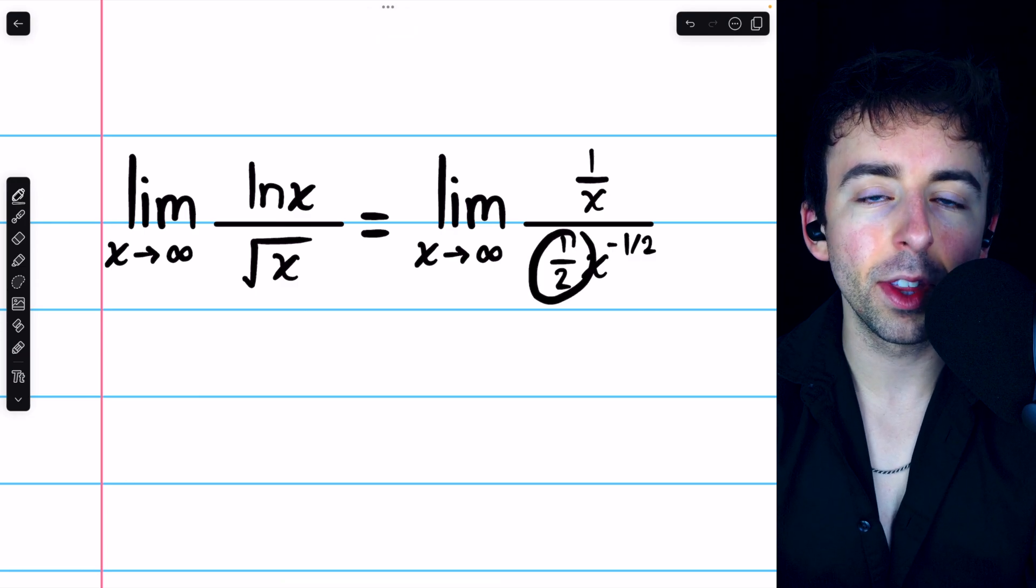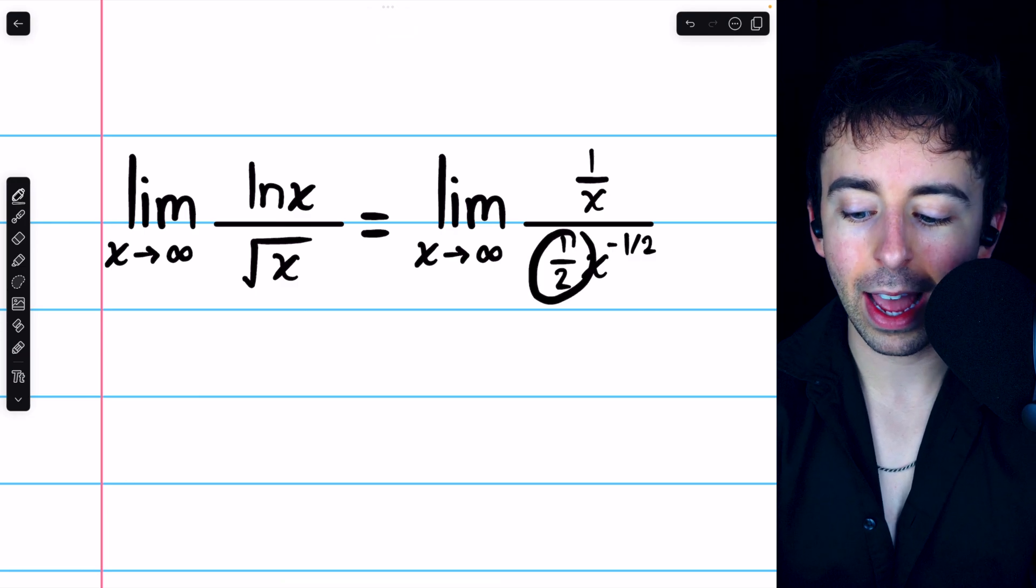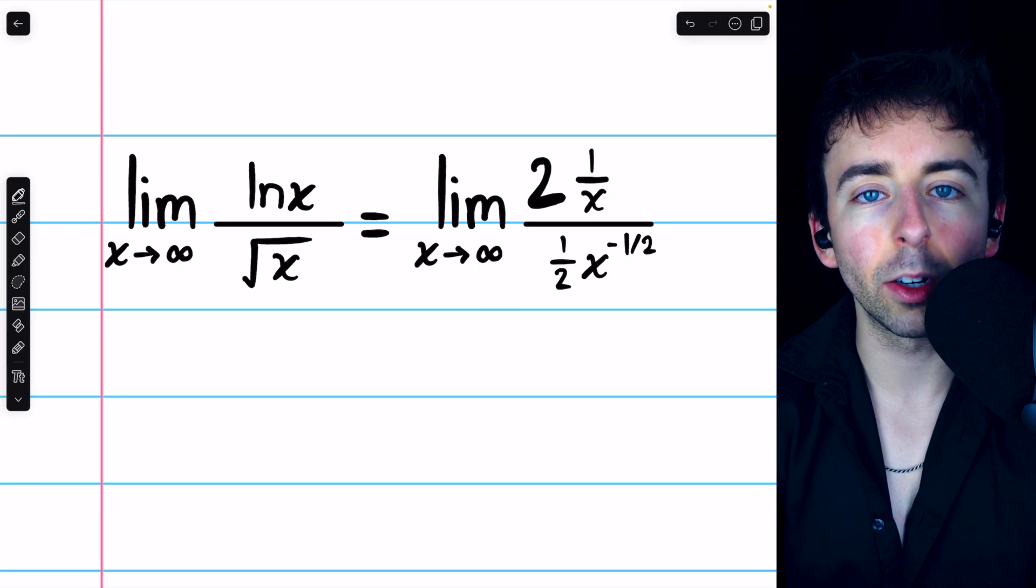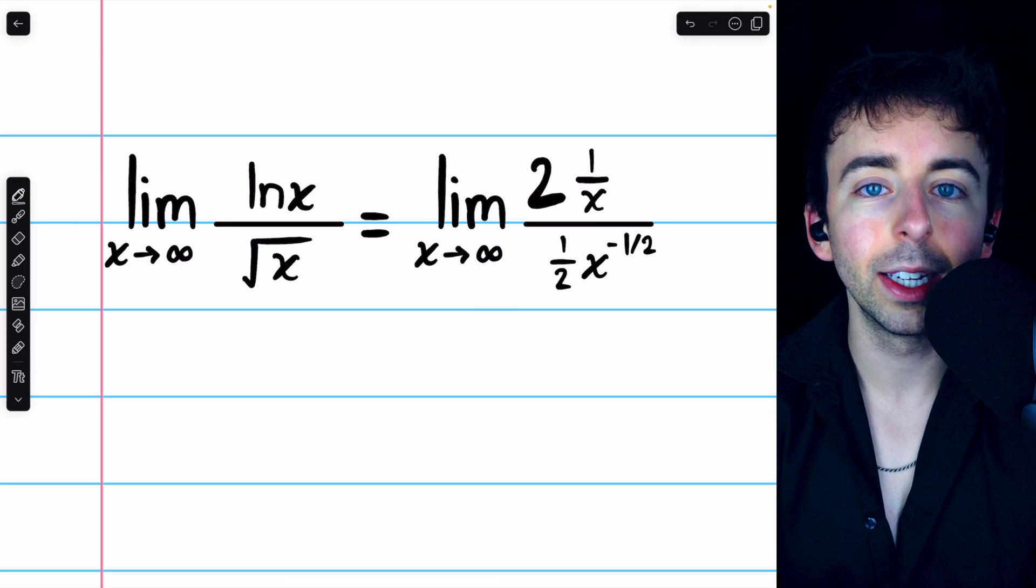We also have a 1 half in the denominator, and dividing by 1 half is the same as multiplying by 2, so we can write it as a factor of 2 in the numerator.